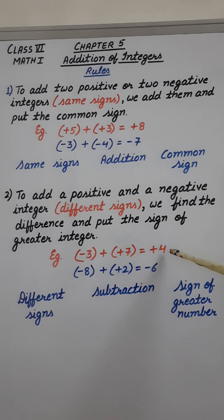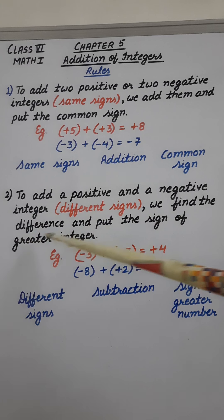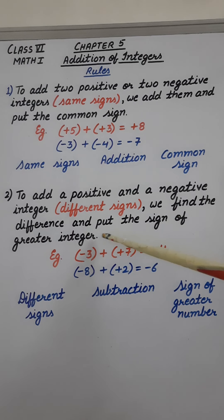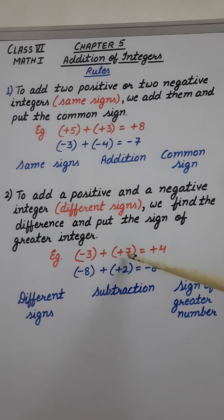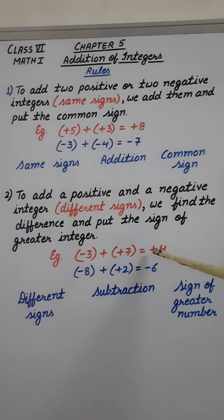And now which sign do we put? The sign of the greater integer. The greater integer is 7, and 7 has a plus sign. That is why the answer is plus 4.